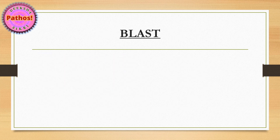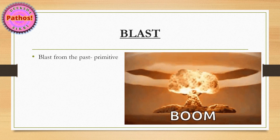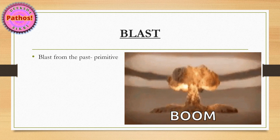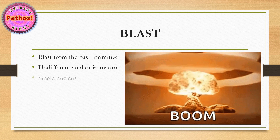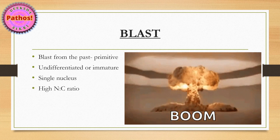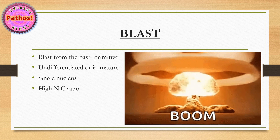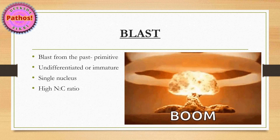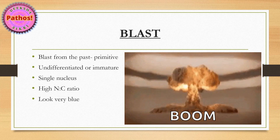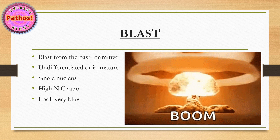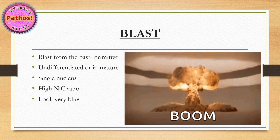Next is the term blast. One thing to remember: blast is like 'blast from the past' — past means old, primitive. So all these cells we call blasts are basically undifferentiated or immature cells. They have a single nucleus and high NC ratio. Imagine a cell with a very high NC ratio — the nucleus stains blue and the cytoplasm stains pink, but with high NC ratio, instead of pinkness we see a lot of blueness. So these cells look very blue, which is why tumors with these cells are called small round blue cell tumors.